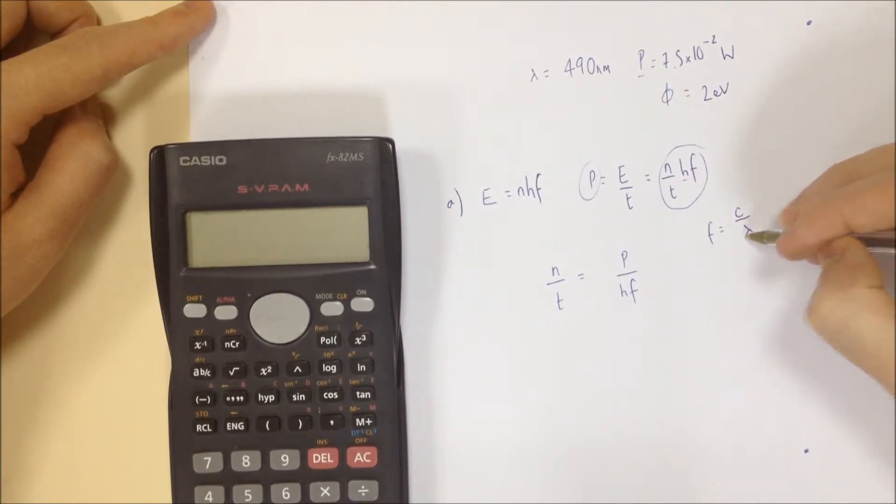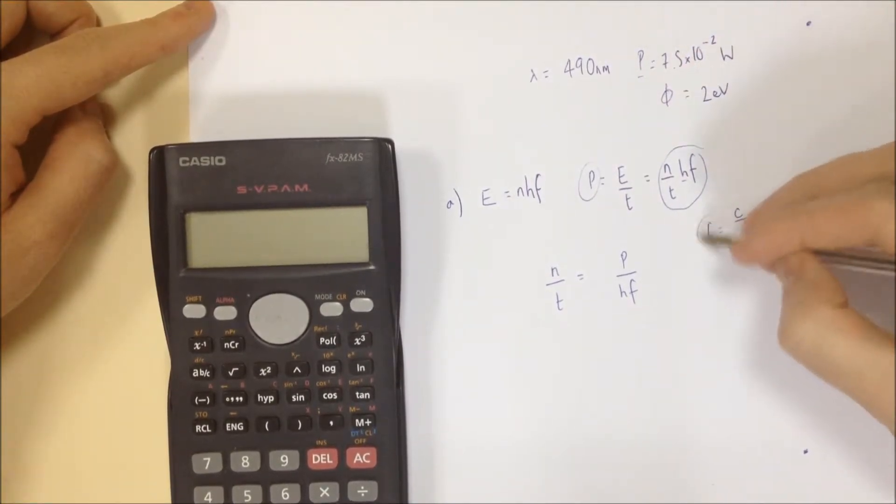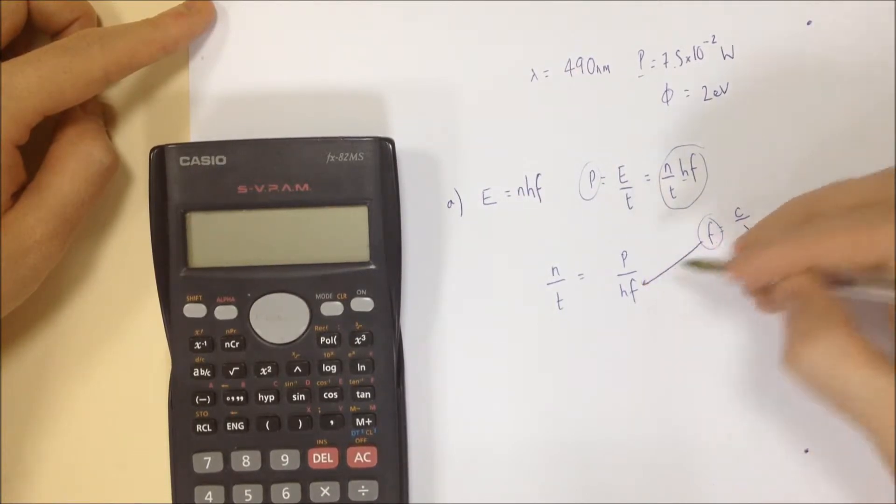F equals C over lambda. You've got your wavelength there. So you plug that value right into here. And when you do all that, it's going to give you the correct answer,